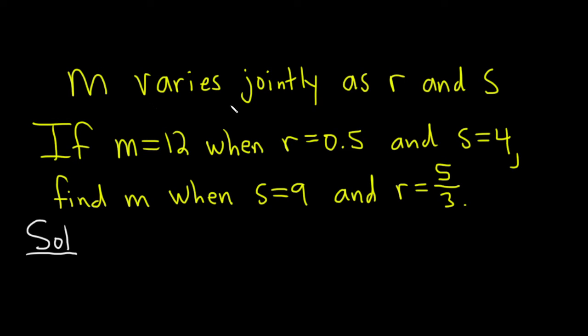It says m varies jointly as r and s. If m equals 12 when r equals 0.5 and s is 4, find m when s equals 9 and r equals 5 thirds. That's a lot of information to process all at once, so let's just do it one step at a time.